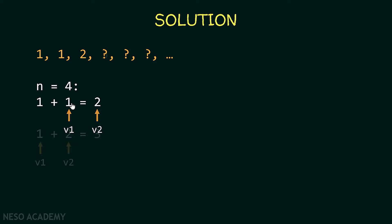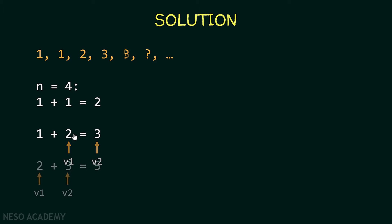We keep doing the same thing: v2 becomes 3, v1 becomes 2, and we add to get 5. Of course if we only want the 4th Fibonacci number we stop there. This operation continues — v1 shifts to the previous v2 and v2 takes the new result — and we keep adding the values.